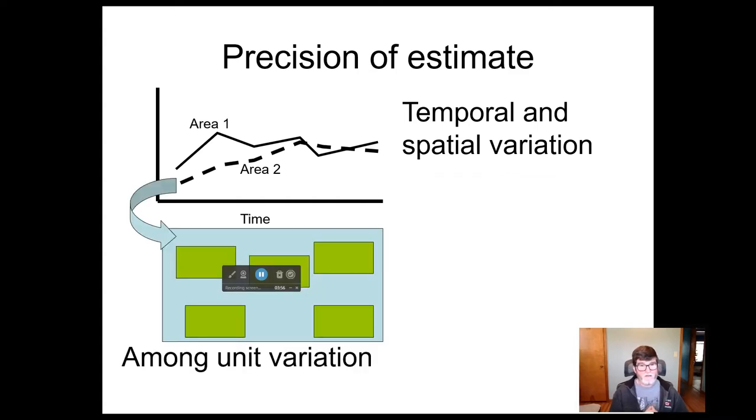In particular, we're going to have a sample at each point and in each area. And among those units within that sample, there's going to be variation. So within each of the green squares, you can think of those as our sample units. Some of them have more of the individuals of the elements that we're counting, and some of them have less. So that's that among sample unit variation.